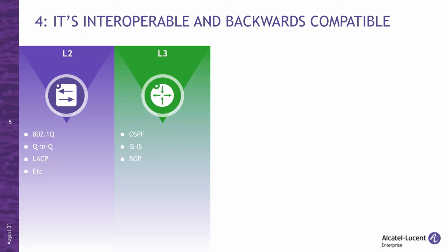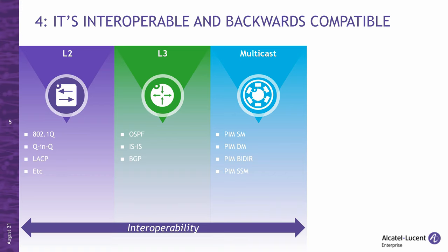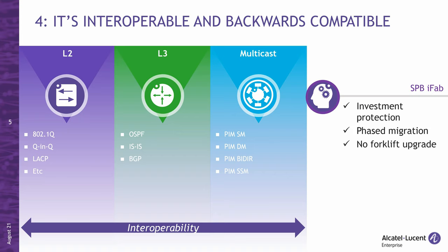At Layer 3, routing in and out towards external non-SPB networks can use standard protocols such as OSPF, ISIS, or BGP. This is also valid for multicast traffic, which can interoperate through Protocol Independent Multicast and its different variants. Bottom line: SPB can interoperate at Layer 2 and Layer 3, including both unicast and multicast traffic. The benefit is investment protection — there is no need for a big-bang forklift upgrade because the migration can be performed in phases aligned with refresh cycles.